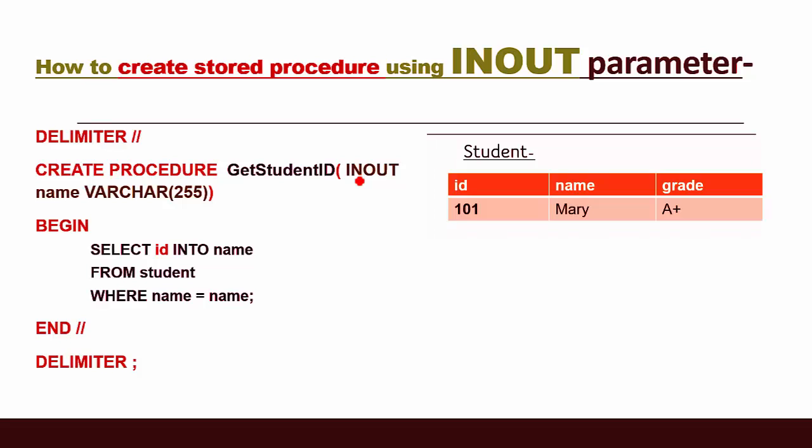We have the same student table with columns id, name, and grade. After the CREATE PROCEDURE statement, the procedure name is 'get_student_id'.